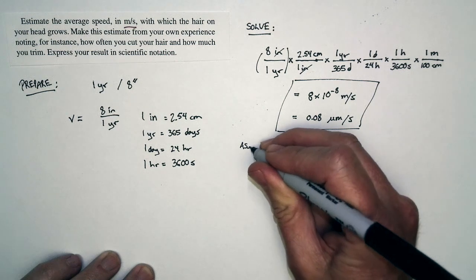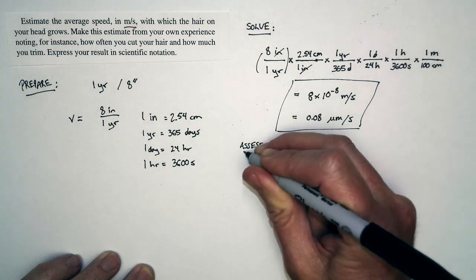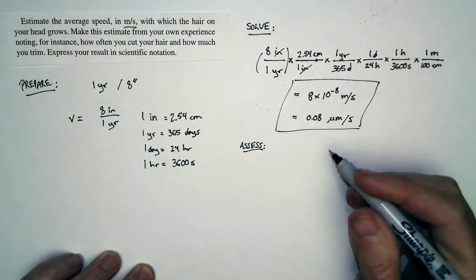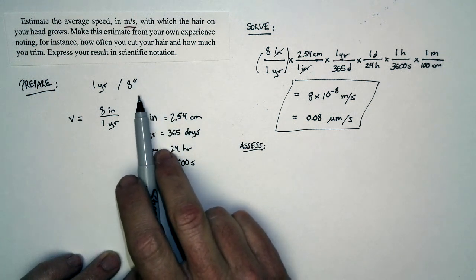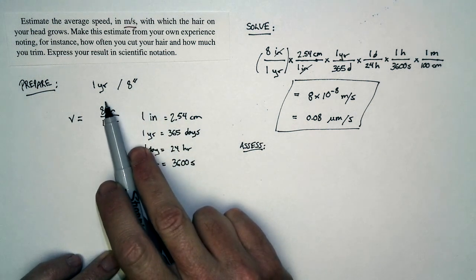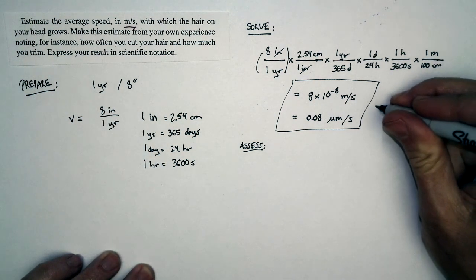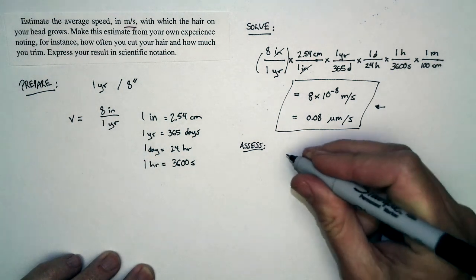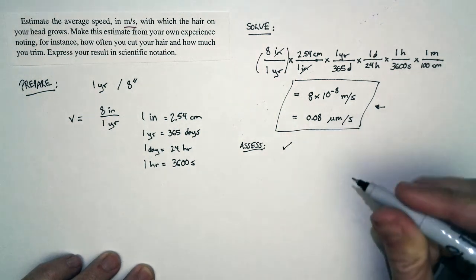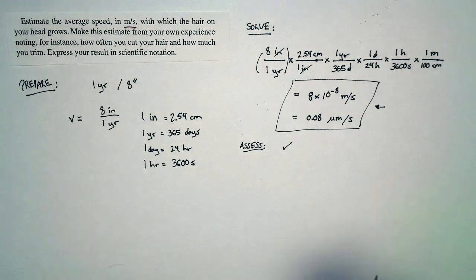Let's do an assessment. Think about this. If I told you that you had a car that moved a distance of 8 inches over a time of one year, you would estimate that that's a very, very slow speed, so we expect this to be a tiny number, and in fact, that's what we found. And so our assessment is that our answer matches the way that we know the world works.